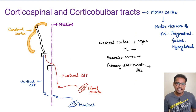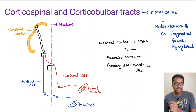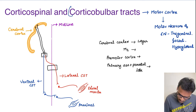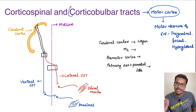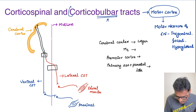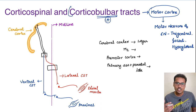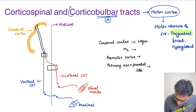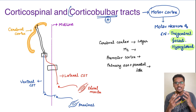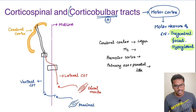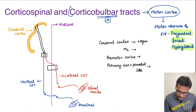Now coming to the corticospinal tract along with the corticobulbar tracts. What is the corticobulbar tract? These tracts originate from the motor cortex. 'Bulbar' means they give motor neurons to the cranial nerves — specifically trigeminal, facial, and hypoglossal. So these tracts which give their fibers to these cranial nerves are called corticobulbar tracts. Basically they innervate the facial regions and upper portion of the neck region.